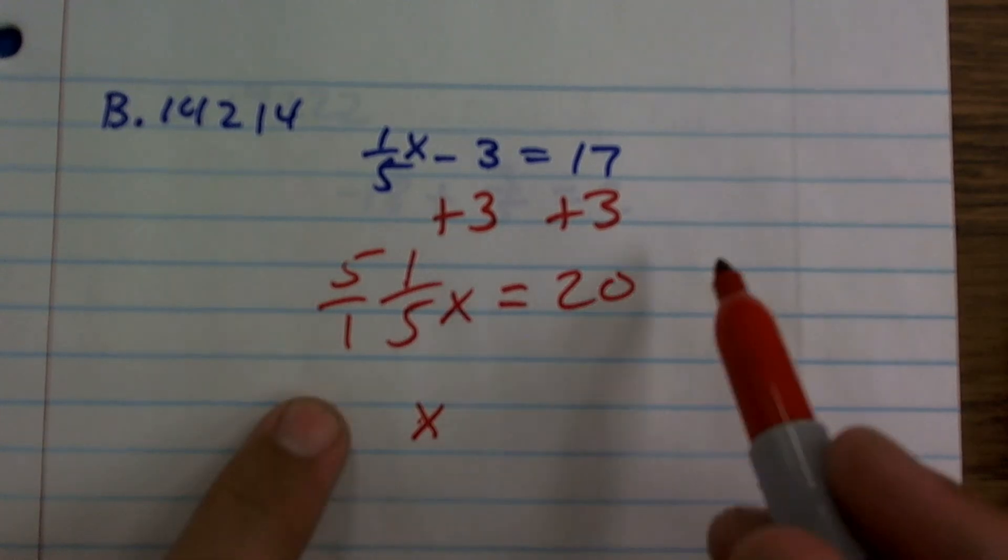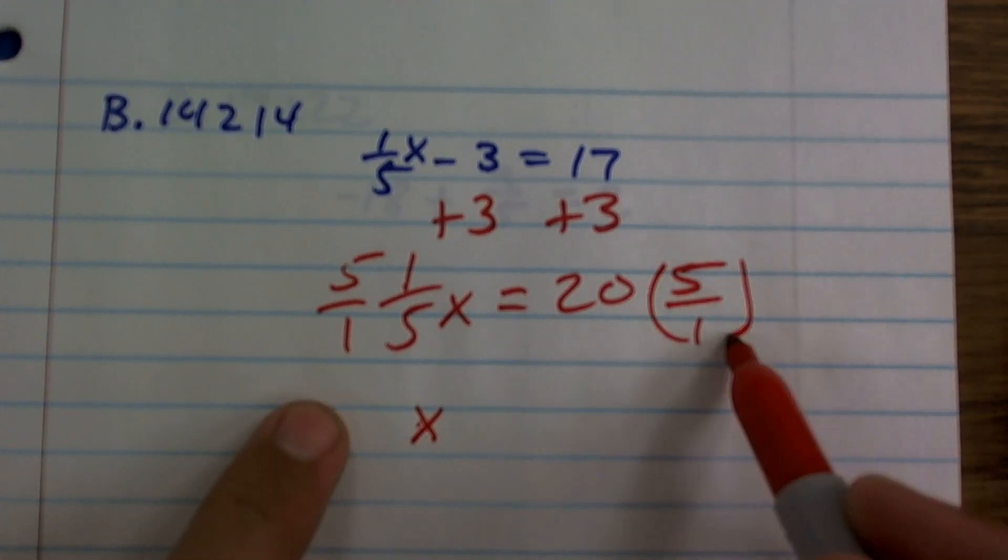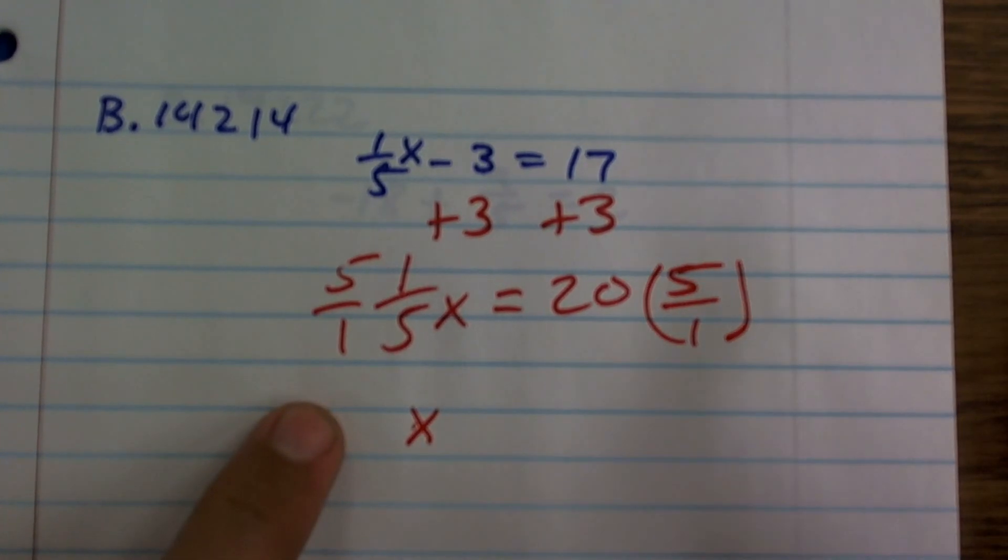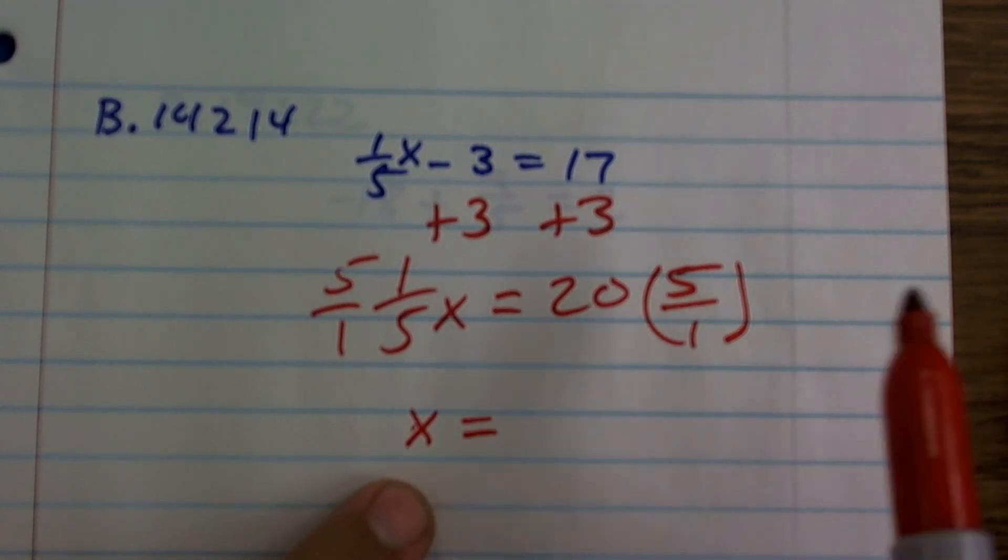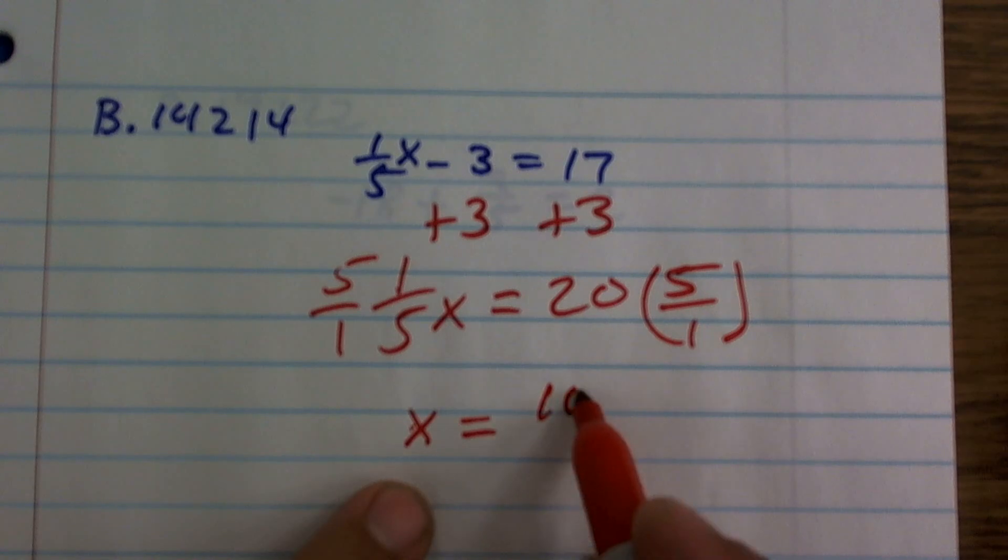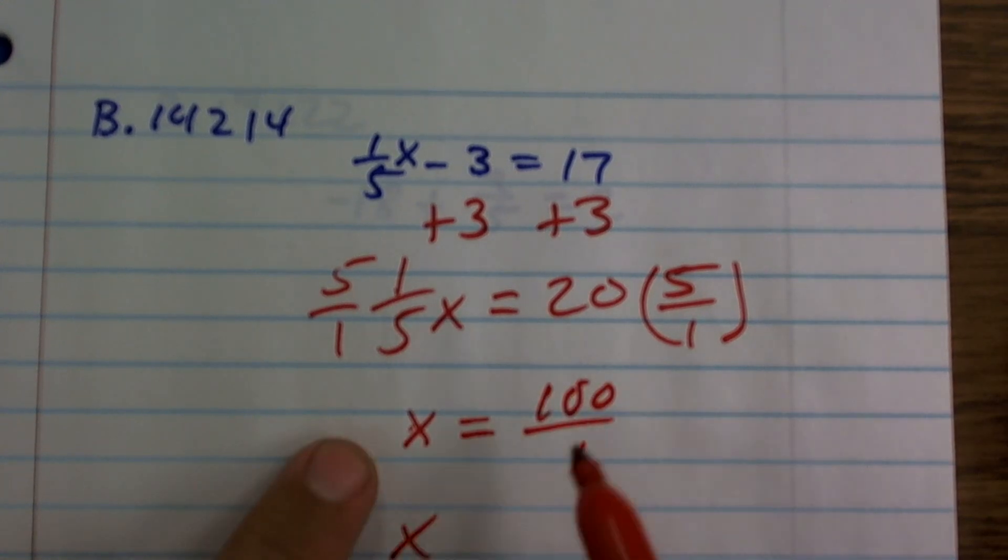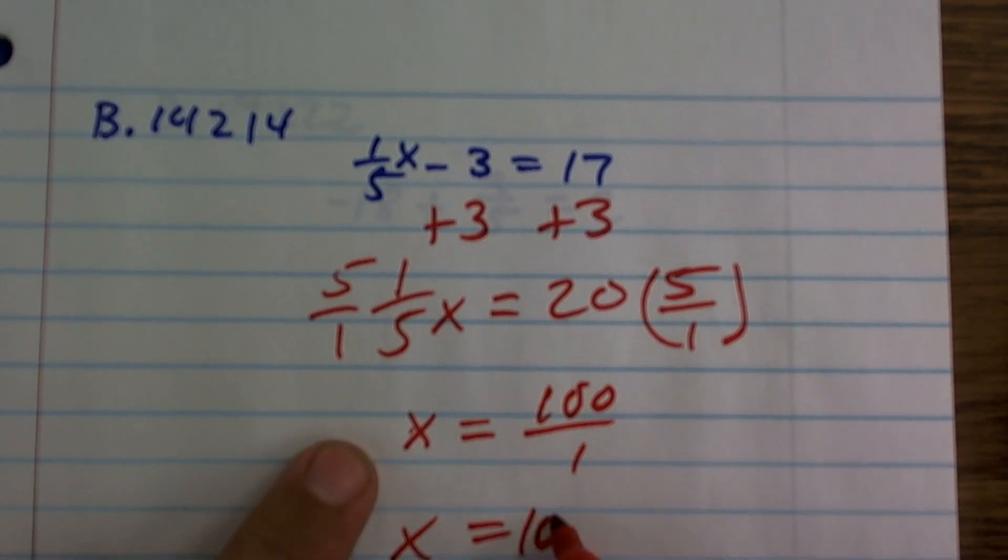Just make sure by the multiplication property of equality, you have to multiply on both sides. So x equals 20 times 5 over 1. 20 times 5 is 100 over 1. 100 over 1 is just equal to 100.